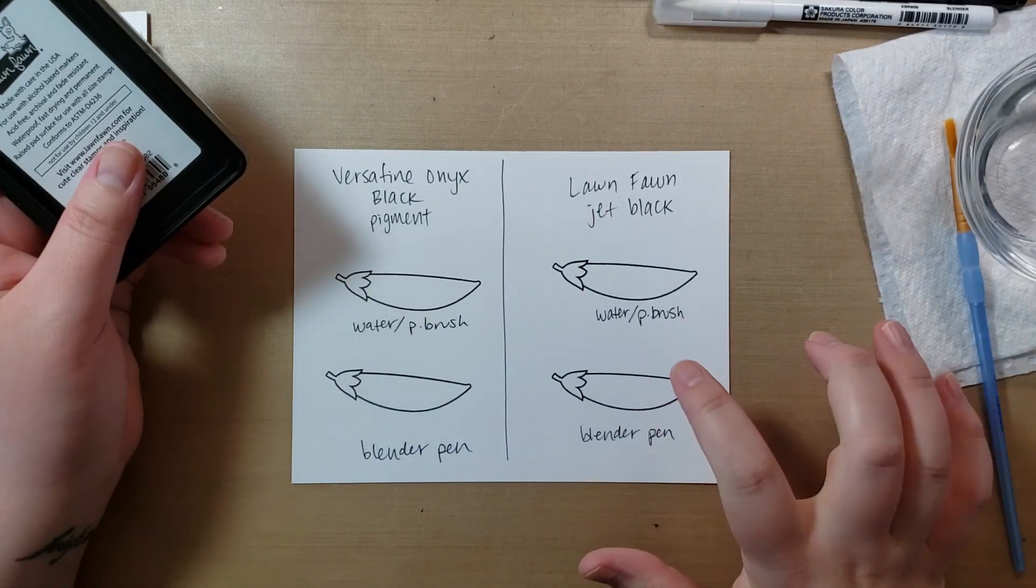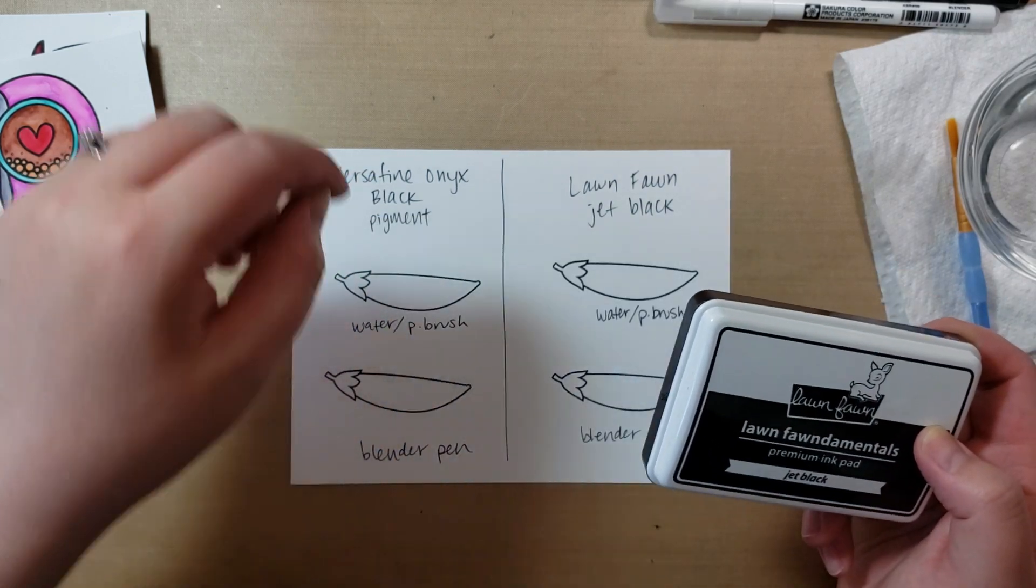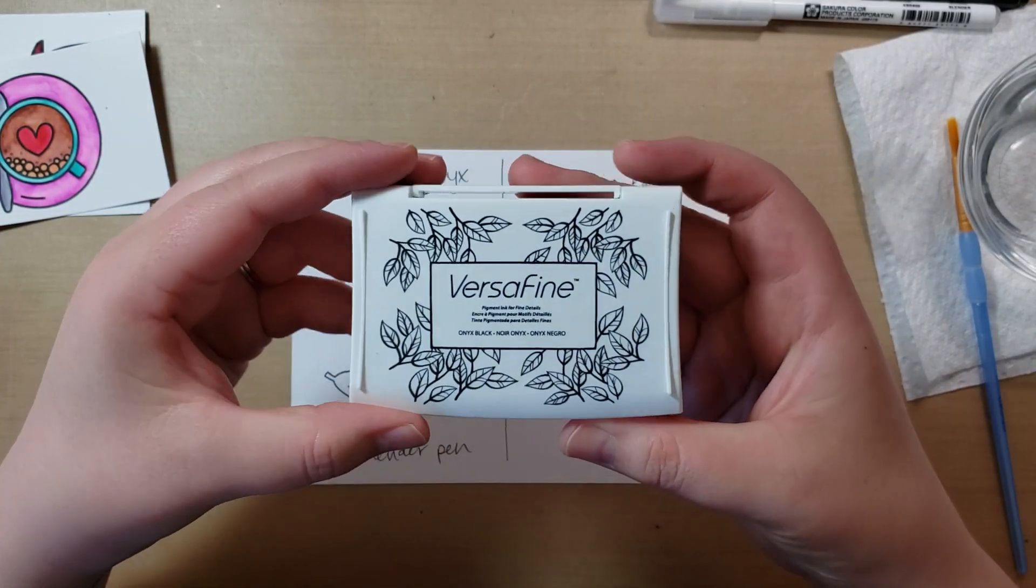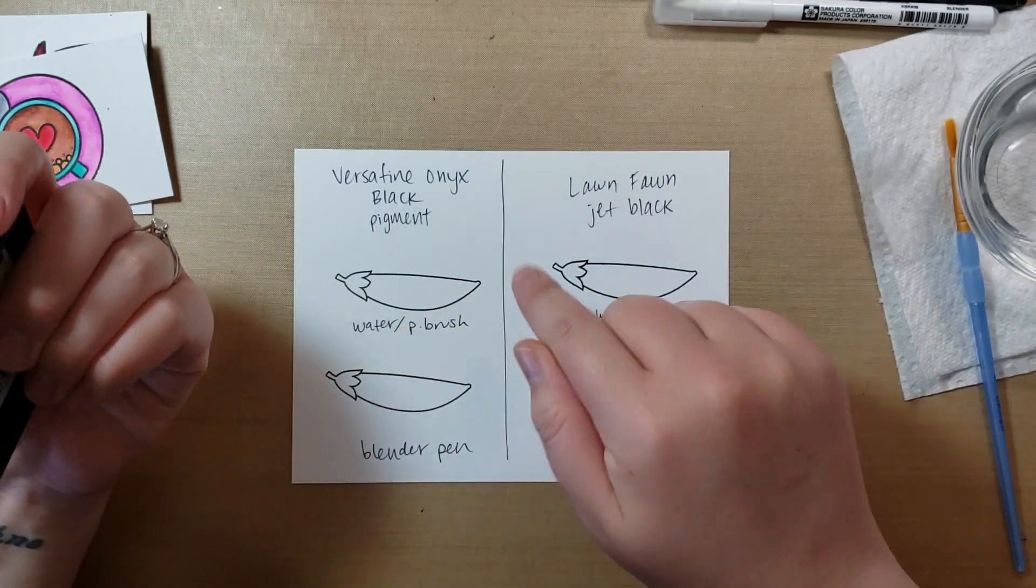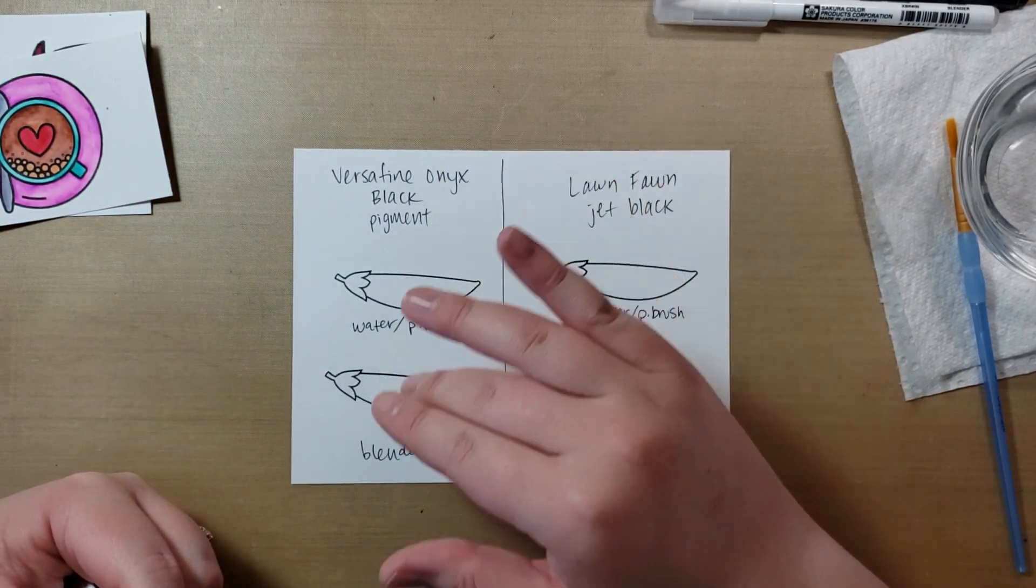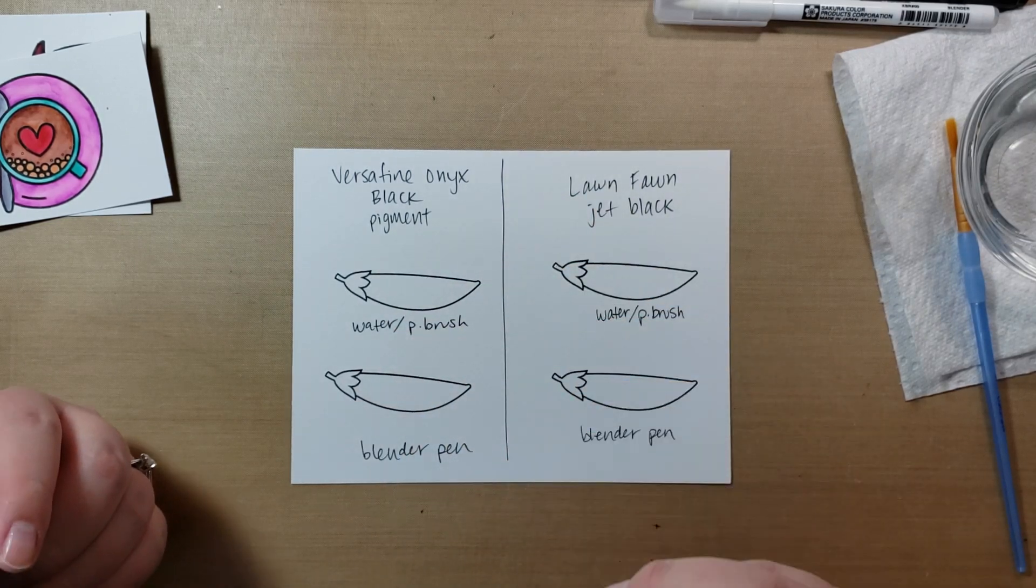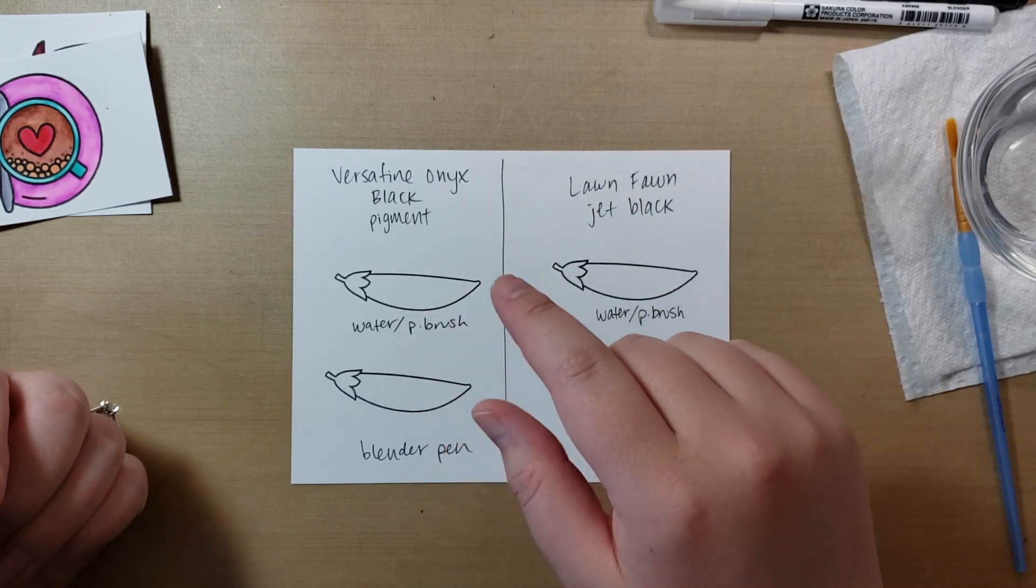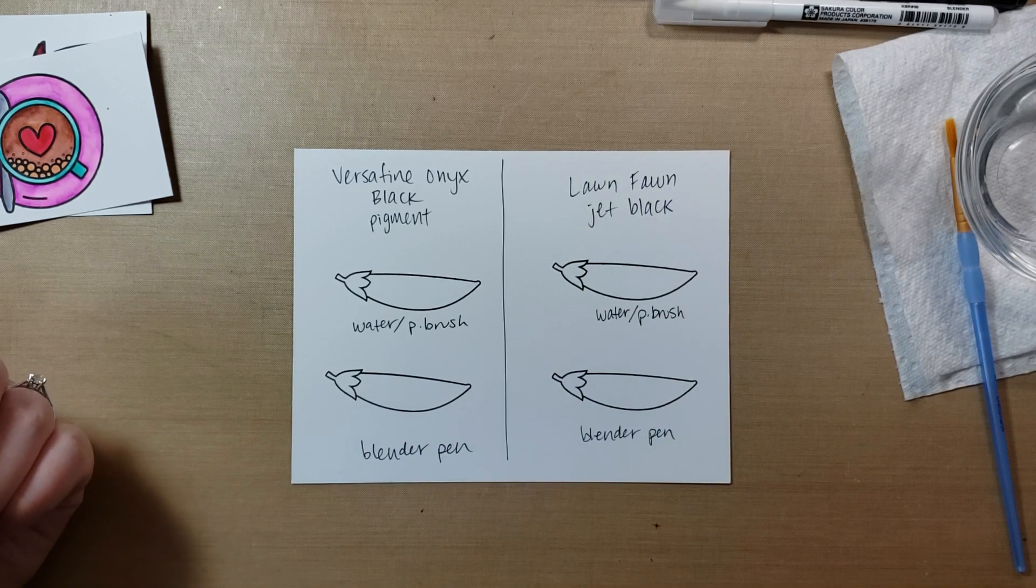This is more of a pigment ink. The Versafine Onyx Black is definitely pigment-y, and it stays wet, which is fine. And normally on Bristol Smooth, I would be sealing this with clear embossing powder and then setting it, which I think is honestly really more fun to watercolor brush in. Because you're kind of like coloring within the lines, and it just gives you kind of a guide. So I do like sealing it with clear embossing powder.